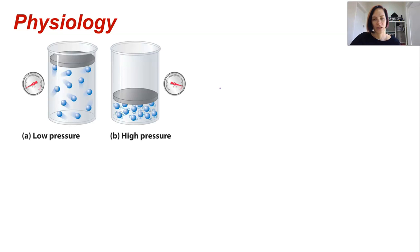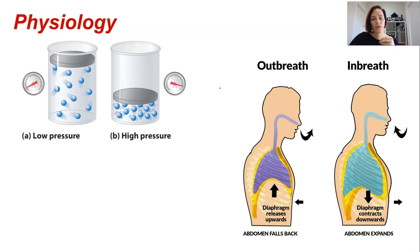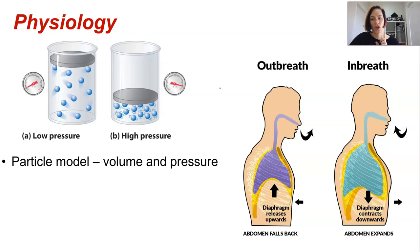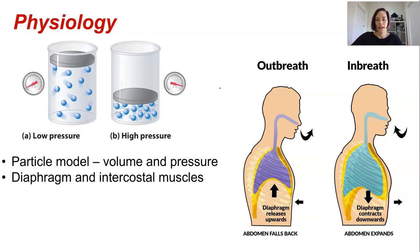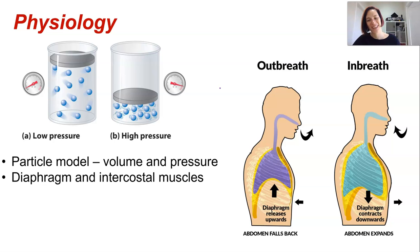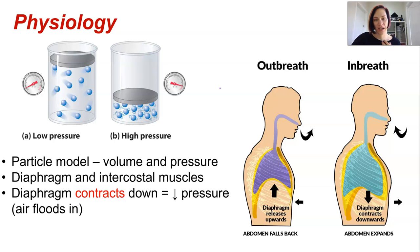The particle model in physics shows us that if you decrease the volume for the same number of particles, the pressure increases. The same applies in the chest during gas exchange — gas particles move to areas of lower pressure. In the thorax, the pressure of gases relies on the movement of the diaphragm and the intercostal muscles between the ribs.